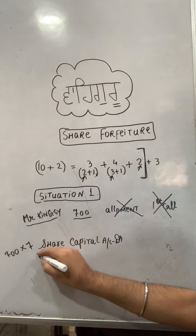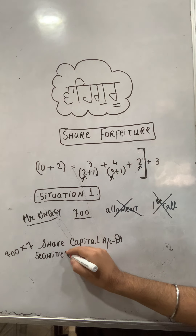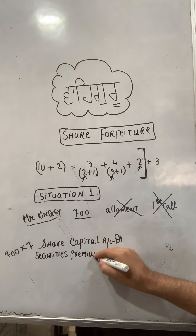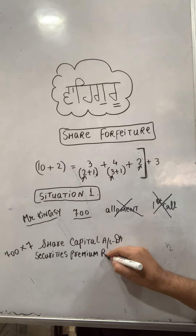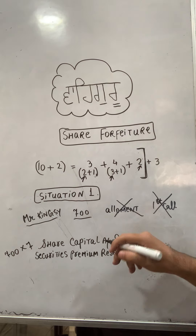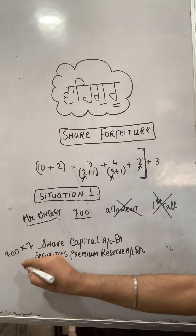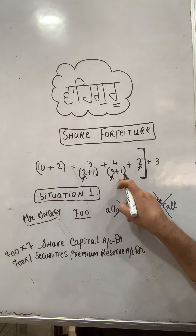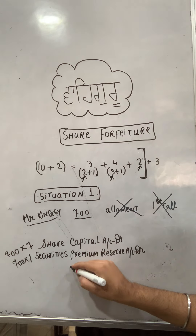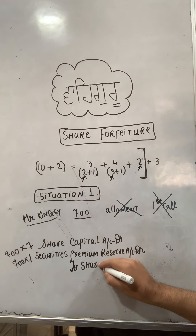Now there is another debit — Security Premium Reserve (SPR). We debit SPR for the premium that was not paid. Application money for SPR was paid, but allotment SPR was not paid. So SPR debit is 700 into 1, representing the unpaid allotment premium.